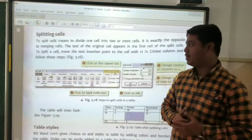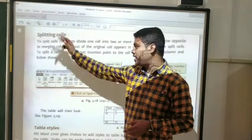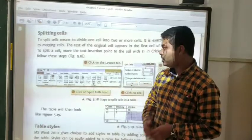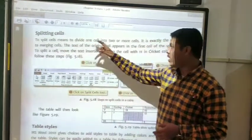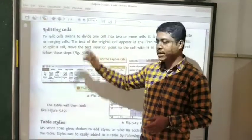We will be discussing tables in MS Word. Today's topic is splitting cells. What is splitting cells? To split a cell means to divide one cell into two or more cells. It is exactly the opposite of merging cells.